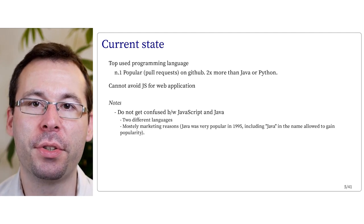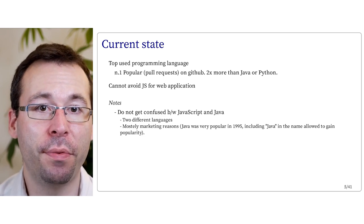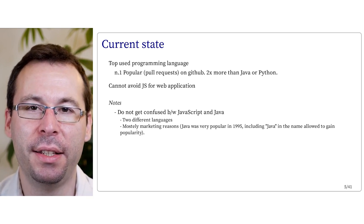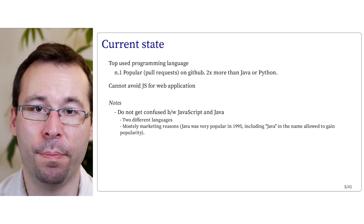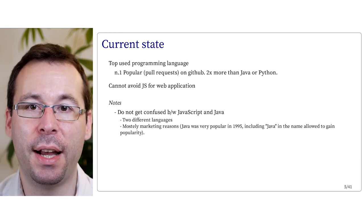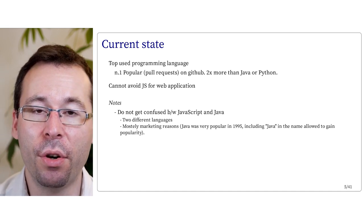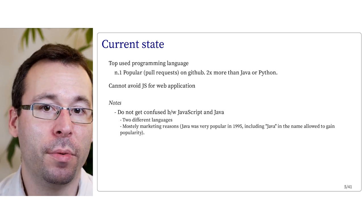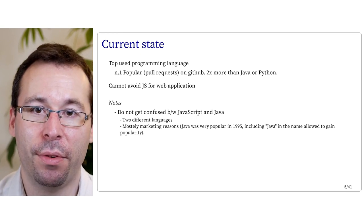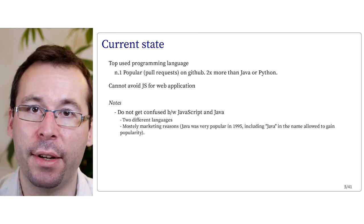A few comments. First, we shouldn't confuse JavaScript and Java — these are actually two different languages without much in common. The reason for the name is very basic: in 1995, the Java programming language was very popular, and the creator of JavaScript thought it would gain popularity more easily by reusing the word Java. So he called it JavaScript, basically for marketing reasons. Other than that, there is no relation between the Java language and the JavaScript language.